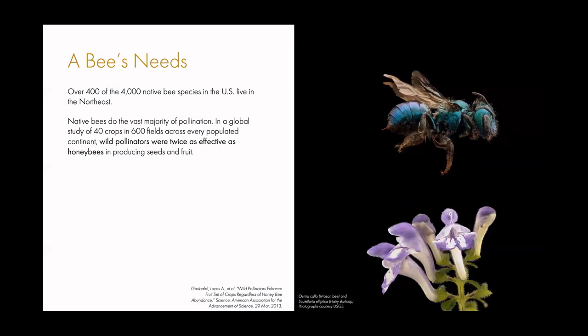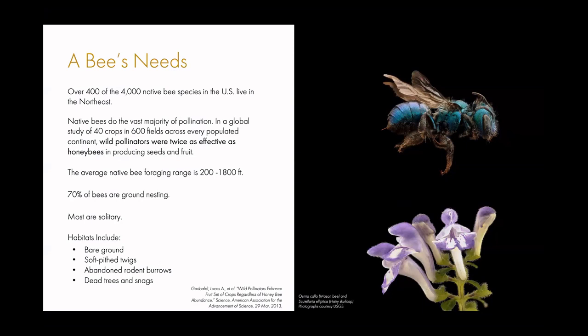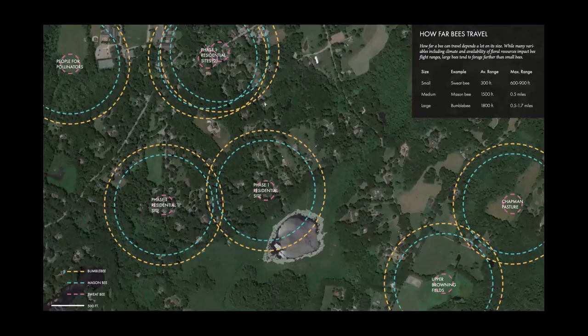Wild pollinators were twice as effective as honeybees in producing seeds and fruit in a global study looking at 40 different food crops across the entire globe. Yet native bees only range on average between 200 and 1,800 feet from their nest, so you really have to have a lot of connectivity in the landscape. Seventy percent of native bees are ground-nesting; most live alone and don't have colonies like honeybees do. Their habitat includes bare exposed ground and well-draining soil, soft twigs they can burrow in, dead limbs or trees, and abandoned eroded burrows.